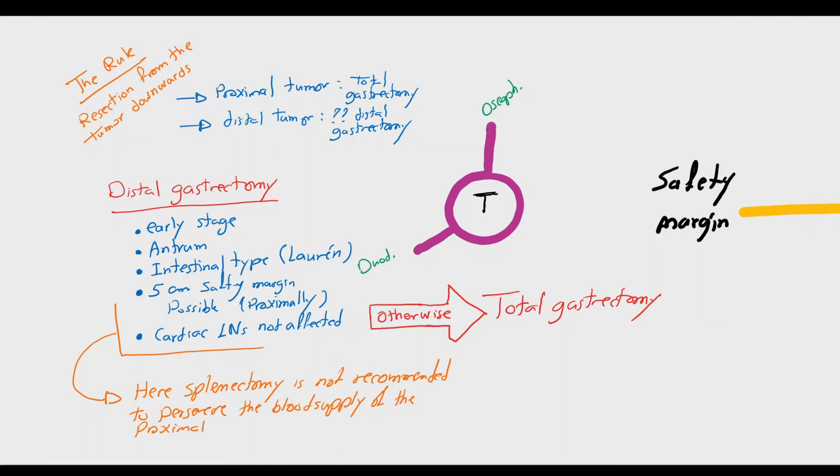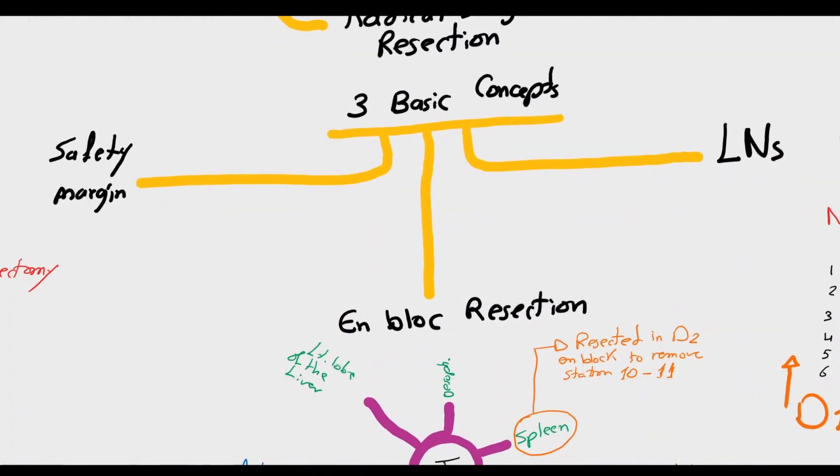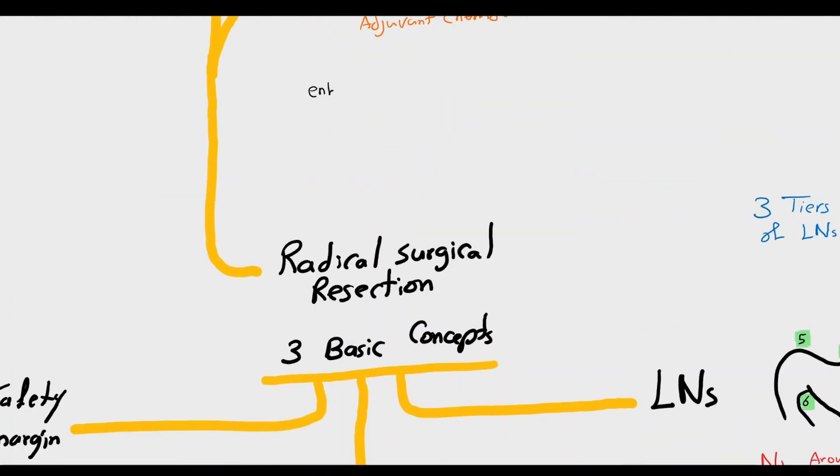A summary of surgical resection: en-bloc resection of all affected tissues, D2 lymphadenectomy of the first two tiers of lymph nodes, safety margin of 5 cm for intestinal type and 8 cm for diffuse type. This is called R0 resection, the best curative option.